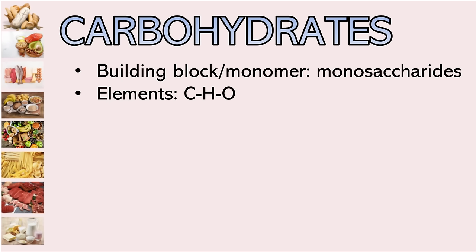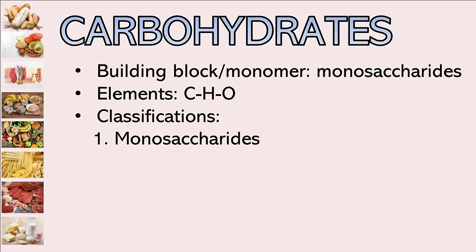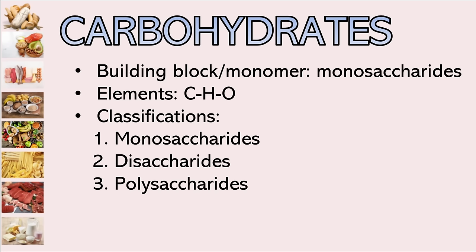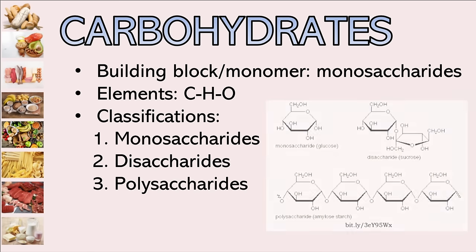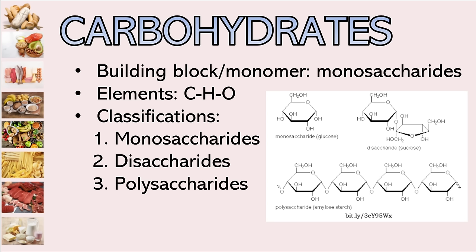There are three classifications of carbohydrates: we have the simplest one, monosaccharides; then disaccharides; and polysaccharides. You can differentiate them by the number of units — mono means one, di means two, and poly means many.